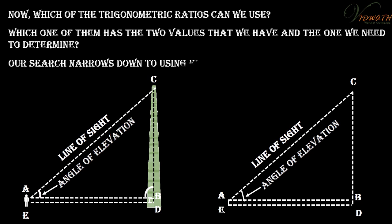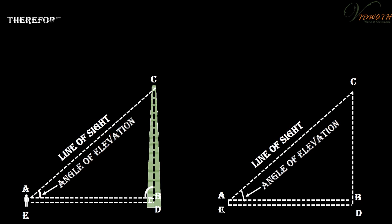Our search narrows down to using either tan A or cot A, as these ratios involve AB and BC. Therefore, tan A is equal to BC divided by AB, or cot A is equal to AB divided by BC, which on solving would give us BC.